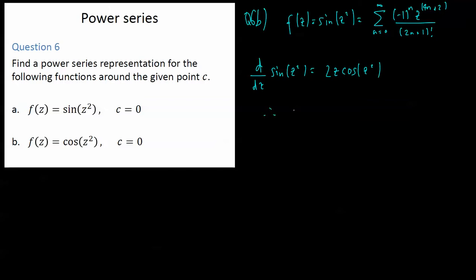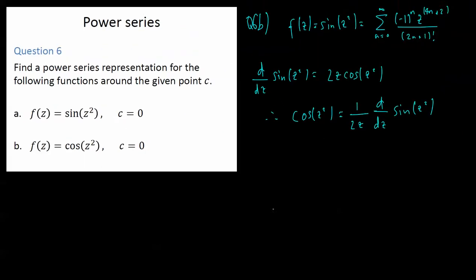So therefore, cos(z²) is equal to 1 over 2z times the derivative of sin(z²). So what I'm going to do is I'm going to use the sin(z²), take the derivative of that and divide by 1 over 2z and see what happens.